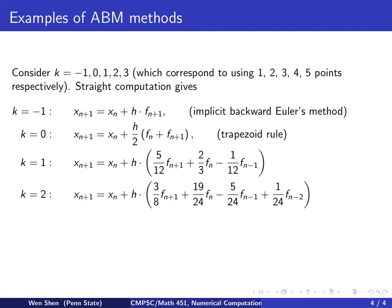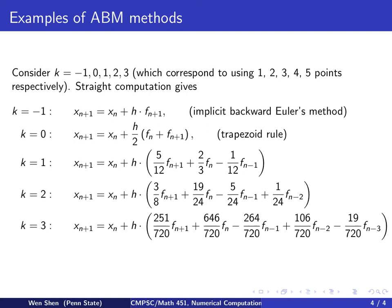One last example. When k equals 3, that will be a fifth-order method. You use five different f values, and you get these pretty big numbers. But if you have the method written, all it takes is to type them in and code it.